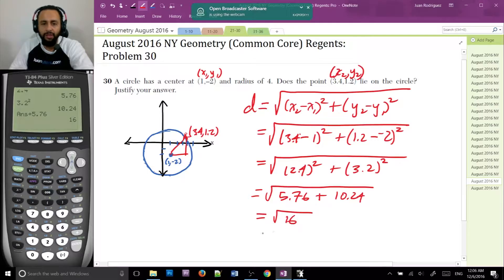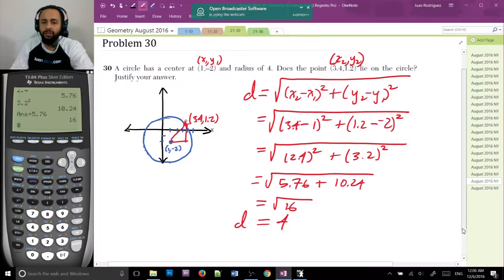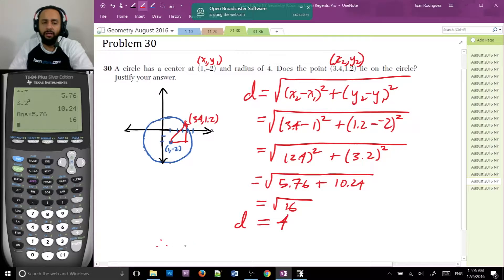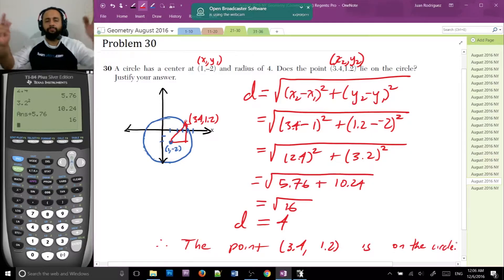Square root of 16 is 4. So the distance is 4. So the conclusion is that this point, the point 3.4 comma 1.2, is on the circle. Done. That's two points.